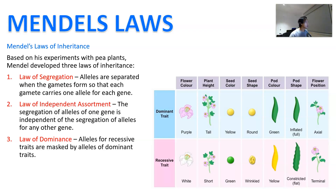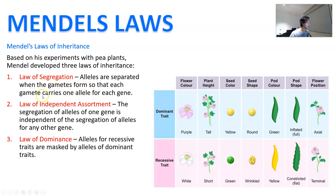We're going to start by looking at Mendel's laws of inheritance. Based on his experiments with pea plants, Mendel developed three laws of inheritance. The first one is called the law of segregation, which is when alleles are separated when the gametes form, so that each gamete — the sperm or the egg — is going to carry one allele for the gene.